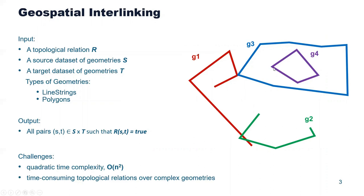This task is quite challenging for two reasons. The first is its quadratic time complexity — the brute force approach compares every source geometry with all target ones. The second challenge is its time-consuming processing: its running time is very high, even for assessing a topological relation for just a single pair of geometries, especially when these geometries are quite complex.